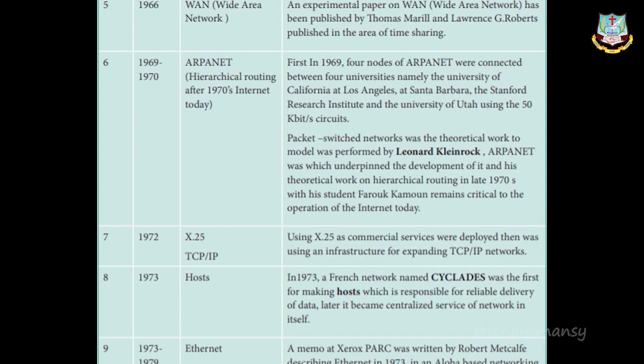Next is hierarchical routing and ARPANET. In 1969, four nodes of ARPANET were connected between four universities: the University of California at Los Angeles, University of California at Santa Barbara, the Stanford Research Institute, and the University of Utah, using 50 kilobit per second circuits.